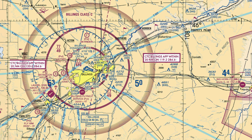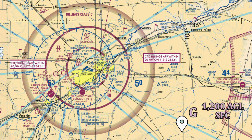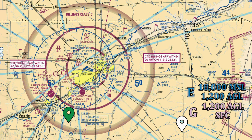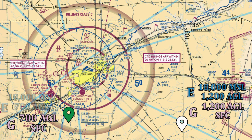Now let's combine what we know so far to figure out the airspace in this area. Outside of our faded magenta, we have Class G airspace from the surface to 1,200 feet AGL, and above that we have Class Echo airspace. Inside of the faded magenta, Class G goes from the surface up to 700 feet AGL, and above that we have Class Echo from 700 feet AGL up to 18,000 feet MSL.